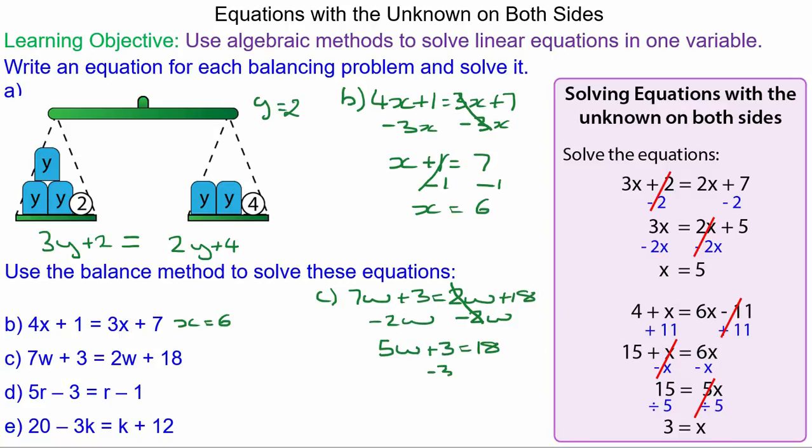We can take away 3 from both sides. 3 take away 3 is 0. 5w equals 15. And we don't want 5w's, we want 1w, so we divide both by 5 and they cancel. And 15 divided by 5 is 3.